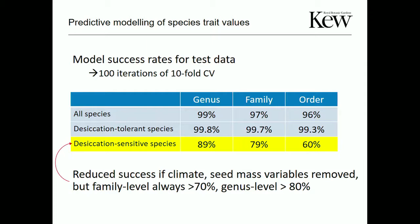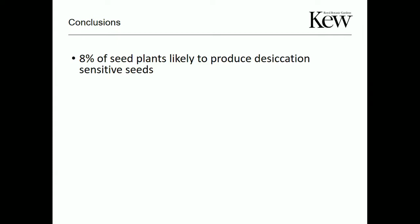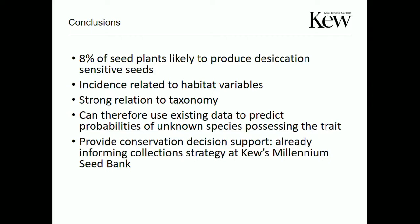In conclusion: about 8% of seed plants likely have the desiccation-sensitive trait. It's related to habitat and taxonomy. We can use these relationships with existing data to predict how unknown species are likely to behave. We're already using this within the Millennium Seed Bank to inform collection strategy and provide decision-making support.